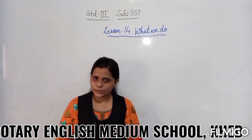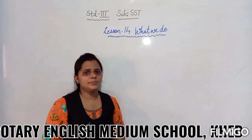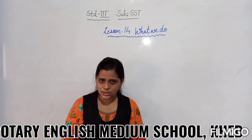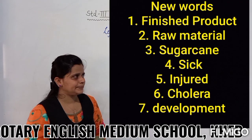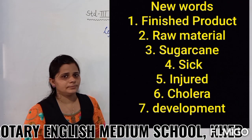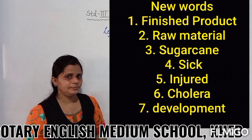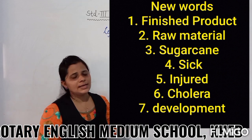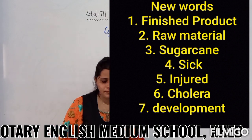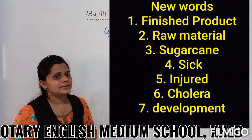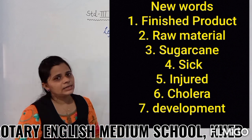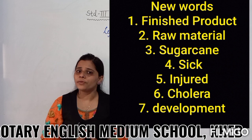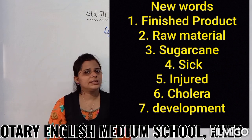Now students, what you are going to do — you have to read the textbook and you have to solve the textual objectives. Now take your new vocabulary words. First, finished product. Second, raw material. Third, sugar cane. Fourth, sick. Fifth, enjoy. Seventh, cholera. Eighth, development. I hope you have understood. Now you will read the textbook and solve the textual objectives.